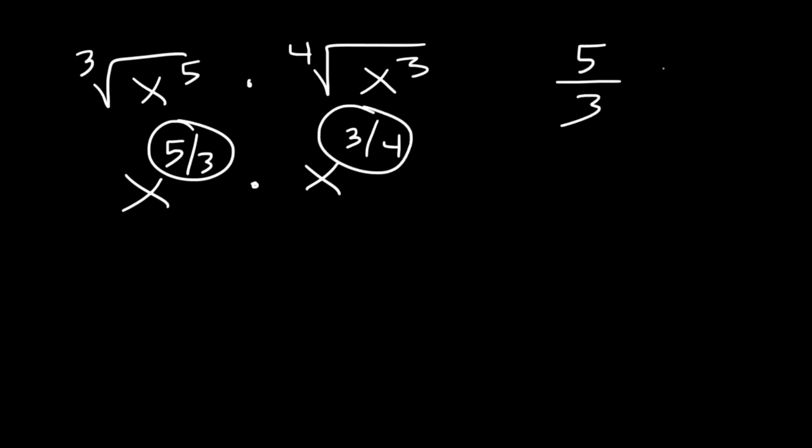5 over 3 plus 3 over 4. They don't have the same denominator, so we need to change it. Let's multiply 5 thirds by 4 over 4 and 3 fourths by 3 over 3. So we can get a common denominator of 12. 4 times 5 is 20. And 3 times 3 is 9.